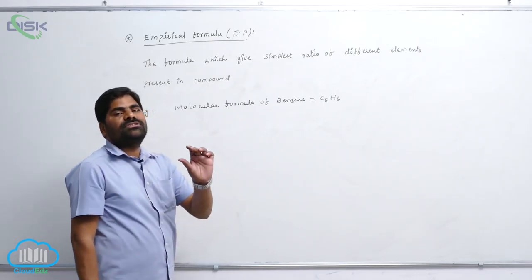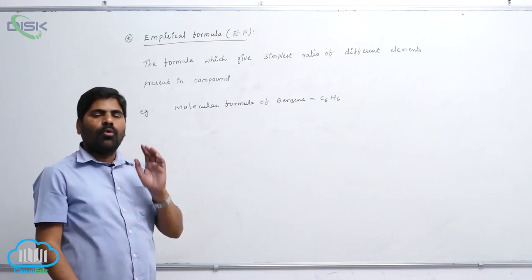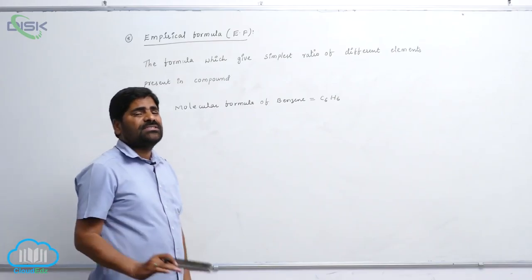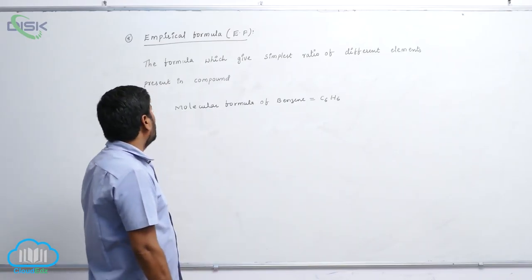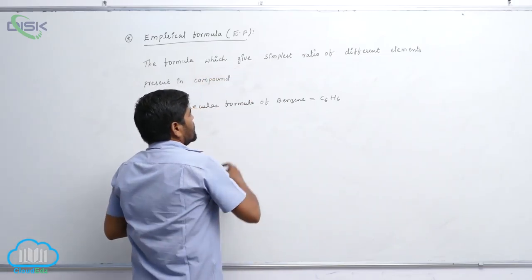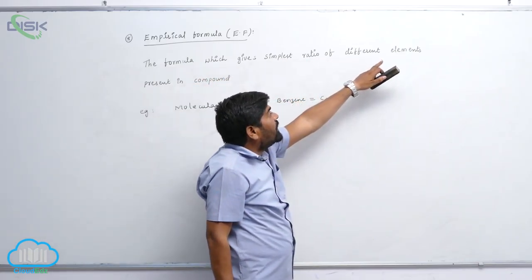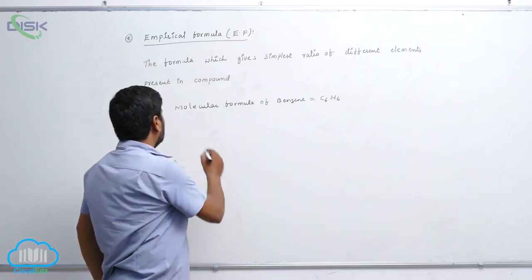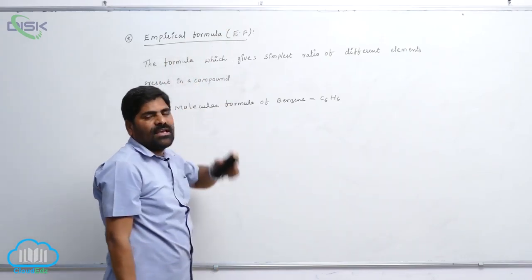The simplest ratio of elements without any whole number, simplest ratio of elements is always known as empirical formula. Which one? Empirical formula. The formula which gives simplest ratio of different elements present in a compound is known as empirical formula.